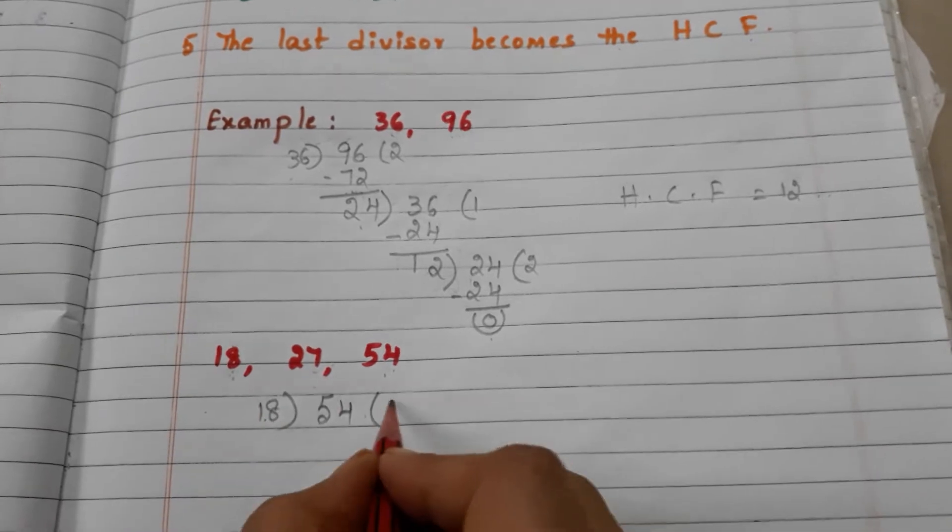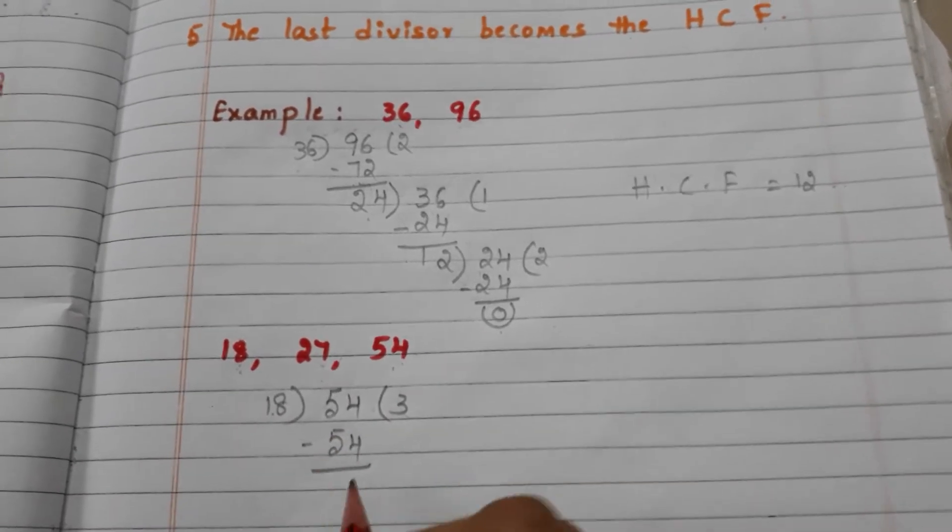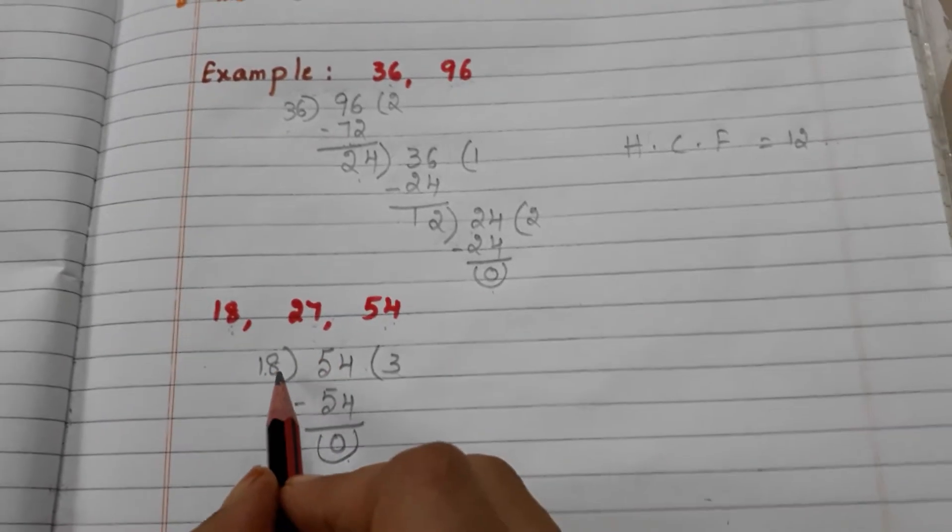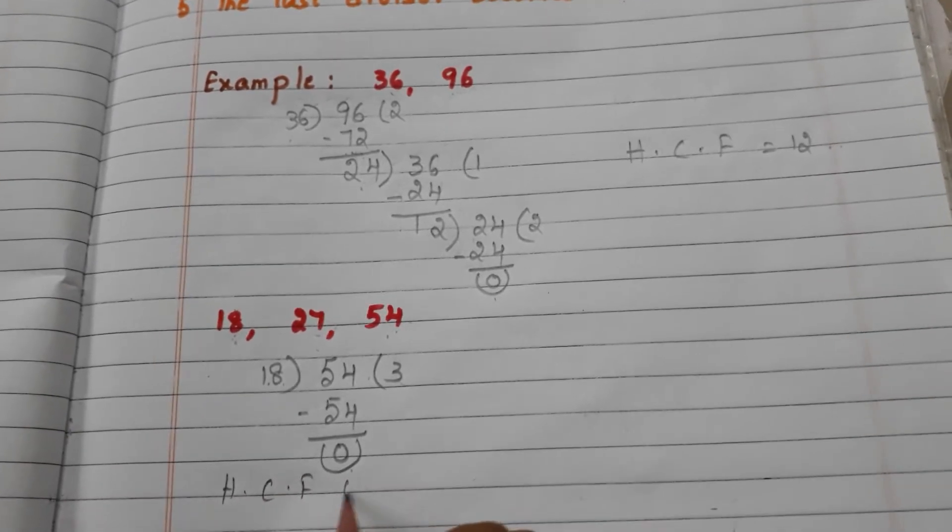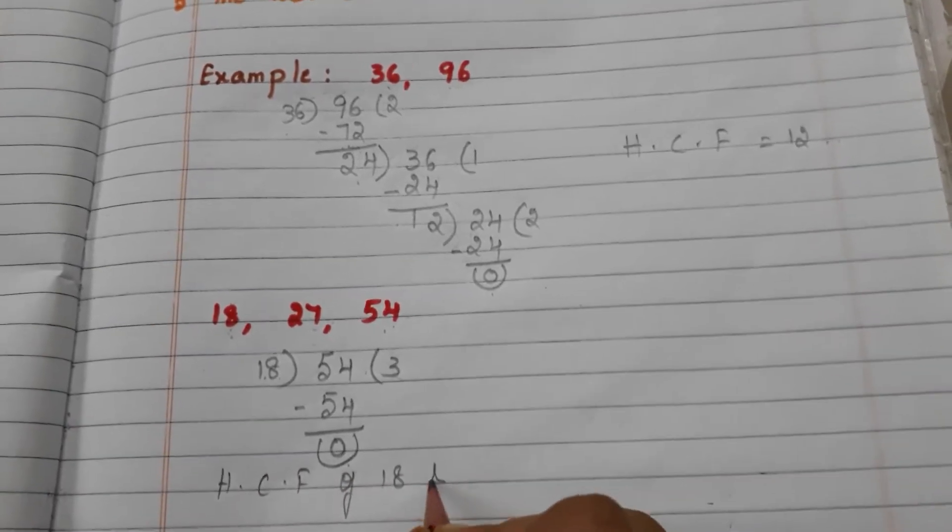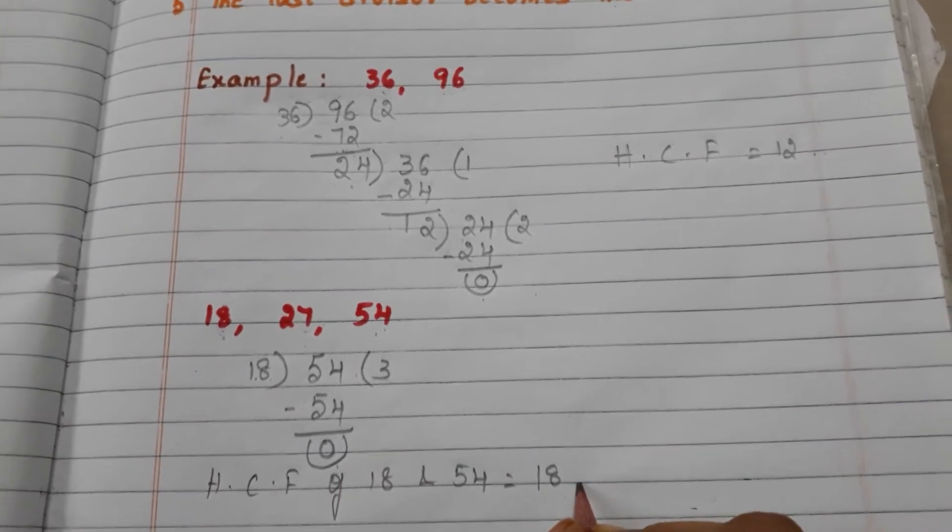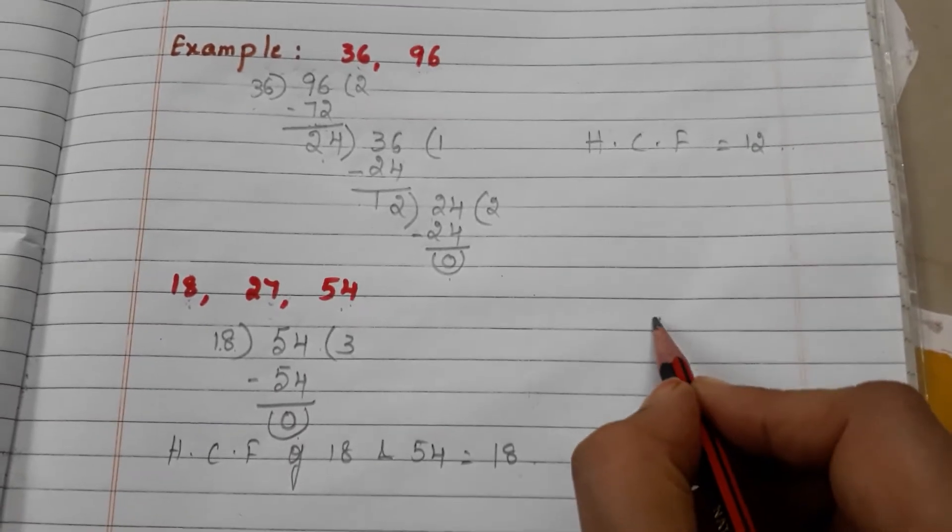18 threes are 54, 54 minus 54 is 0. We got the 0, so HCF of 18 and 54 equals how much? 18. Okay, we have another number here. We have to take the third number. The divisor becomes the HCF of the two numbers 18 and 54, so 18 is the divisor.